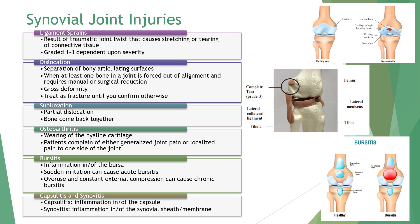Dislocations and subluxations result in a separation of the bony articular surfaces. A subluxation is a partial dislocation causing incomplete separation of two bones, where the bones come back into alignment by themselves. A dislocation occurs when at least one bone in a joint is forced out of alignment and must be manually or surgically reduced. There is a high incidence of finger and shoulder dislocations. Gross deformity is typically apparent on bilateral comparison.